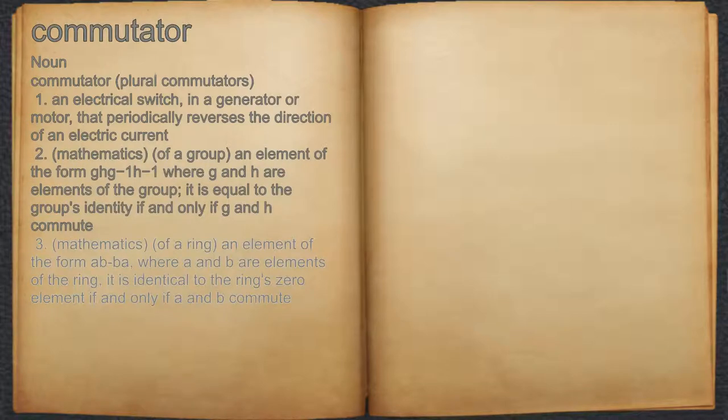3. Mathematics, of a ring: an element of the form AB-BA, where A and B are elements of the ring. It is identical to the ring's zero element if and only if A and B commute.